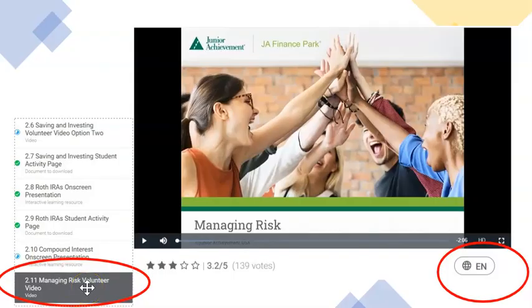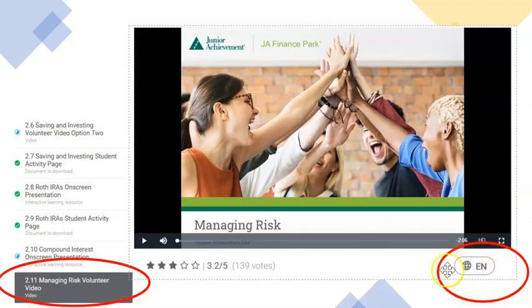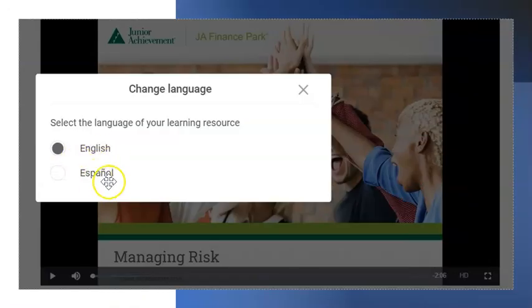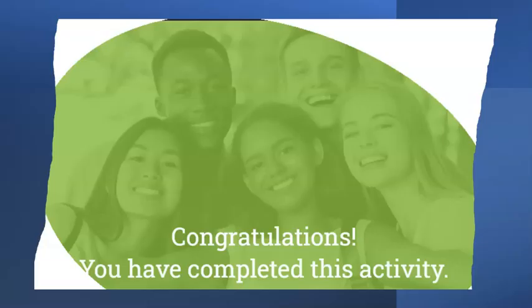Once you've worked through all of Rule of 72, go back to the other page for 2.11 managing risk. This is a video, so you just have to watch it. If you would like it in Spanish, click the button over here and select Spanish to listen in a different language. Make sure you watch the whole video and then you are done. Today's goal is 2.8, 2.10, and 2.11. Thank you.